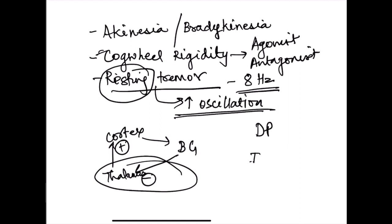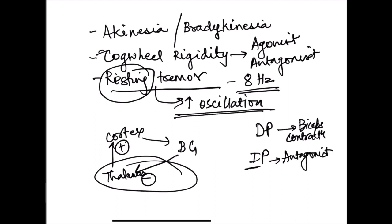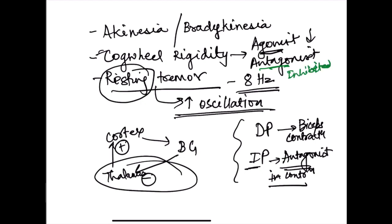The direct pathway facilitates agonist contraction — for example, biceps contraction for elbow flexion — while the indirect pathway causes inhibition of the antagonist. In parkinsonism, the agonist is activated less and the antagonist is inhibited less, and that is the reason we get cogwheel rigidity.